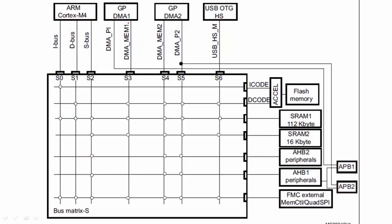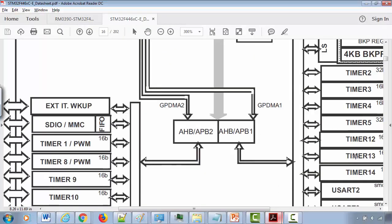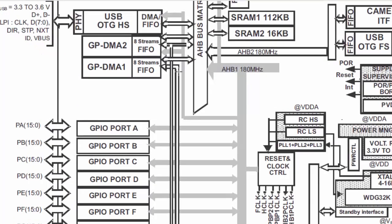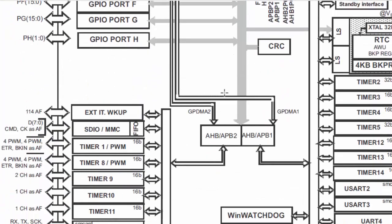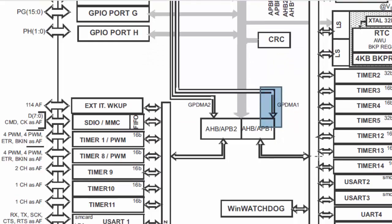Now let's come to DMA1. DMA1 has two master AHB ports giving out two buses: one is called the DMA peripheral bus and the other is the DMA memory bus. The memory bus is connected to the bus matrix and has the capacity to access all the slaves, whereas the peripheral bus is connected all the way to the APB1 bus, as we can verify using the block diagram — the DMA1 bus comes all the way to and touches the APB1 bus.